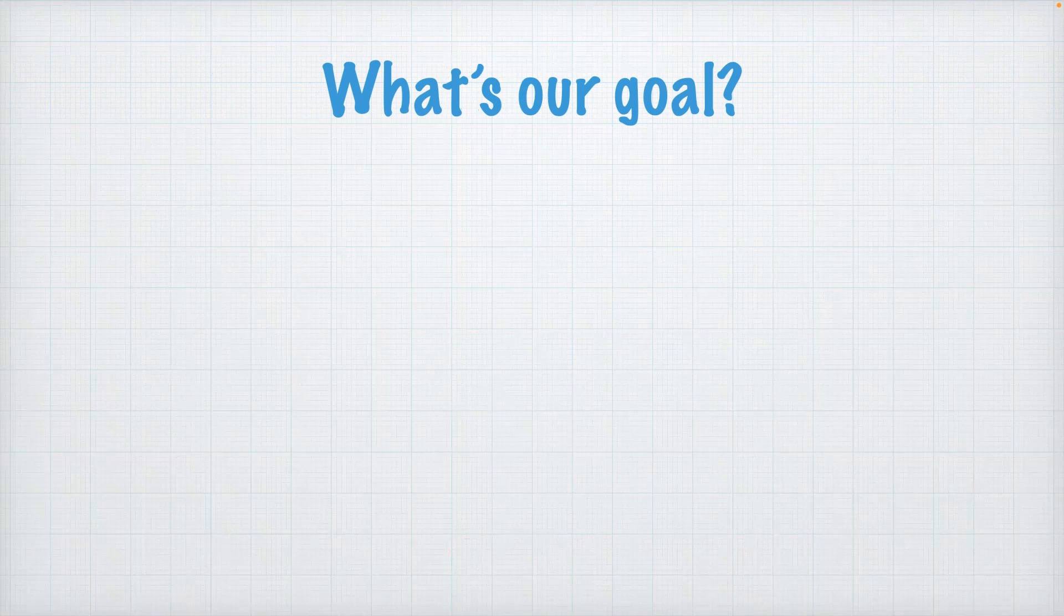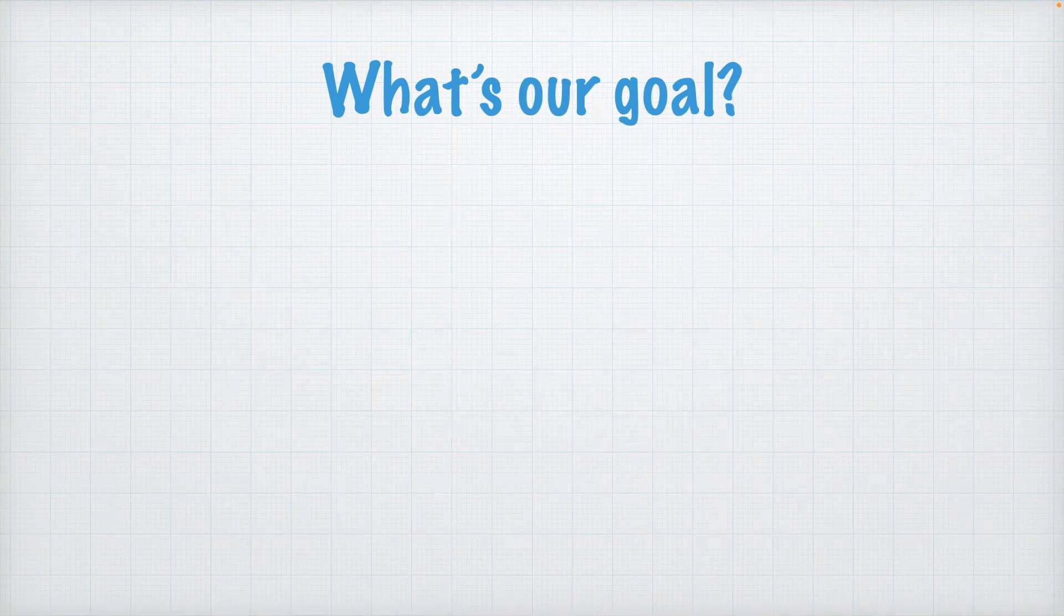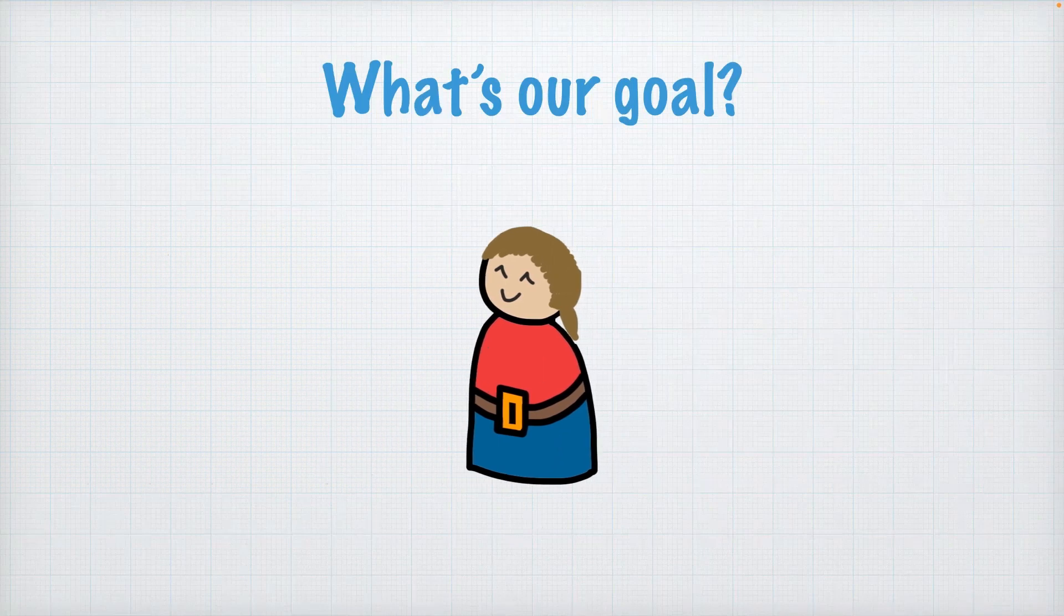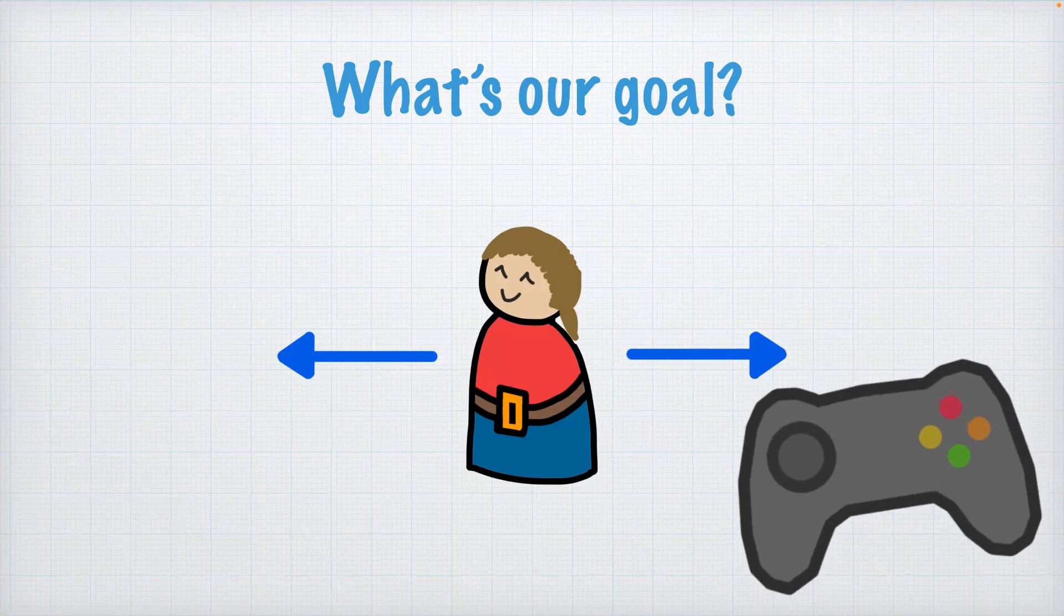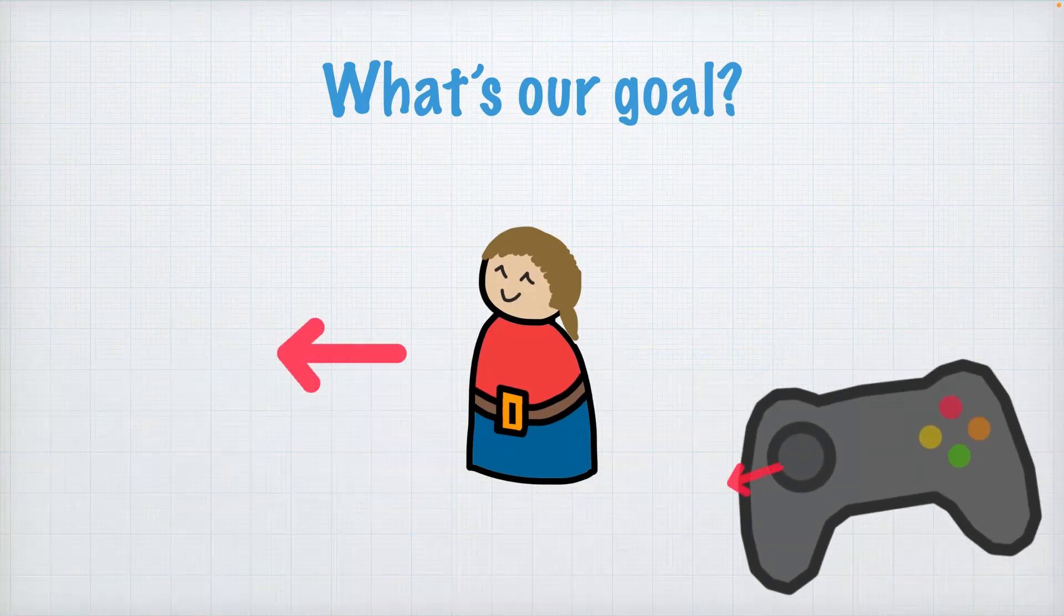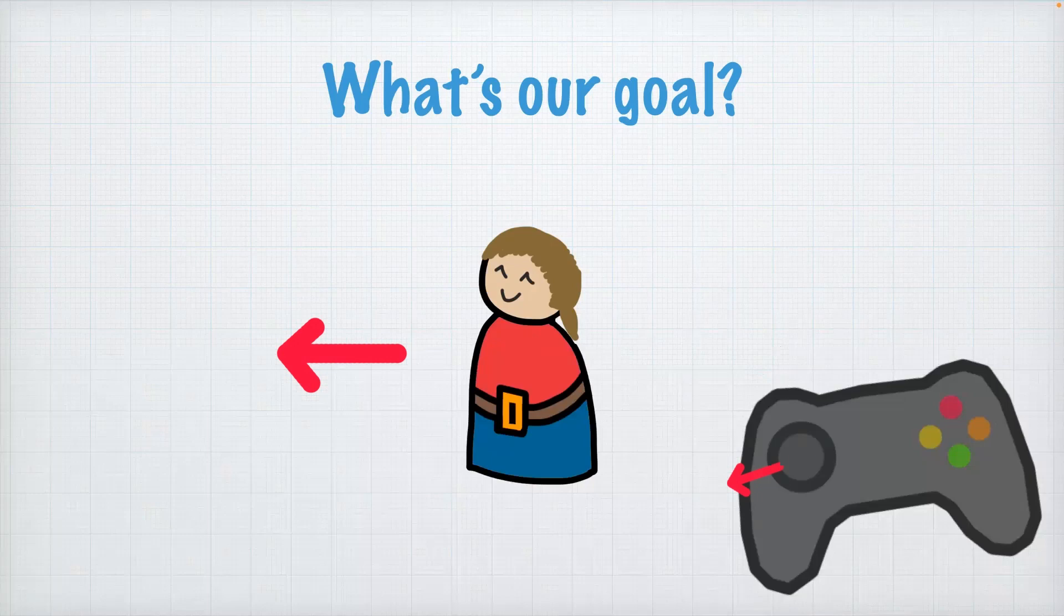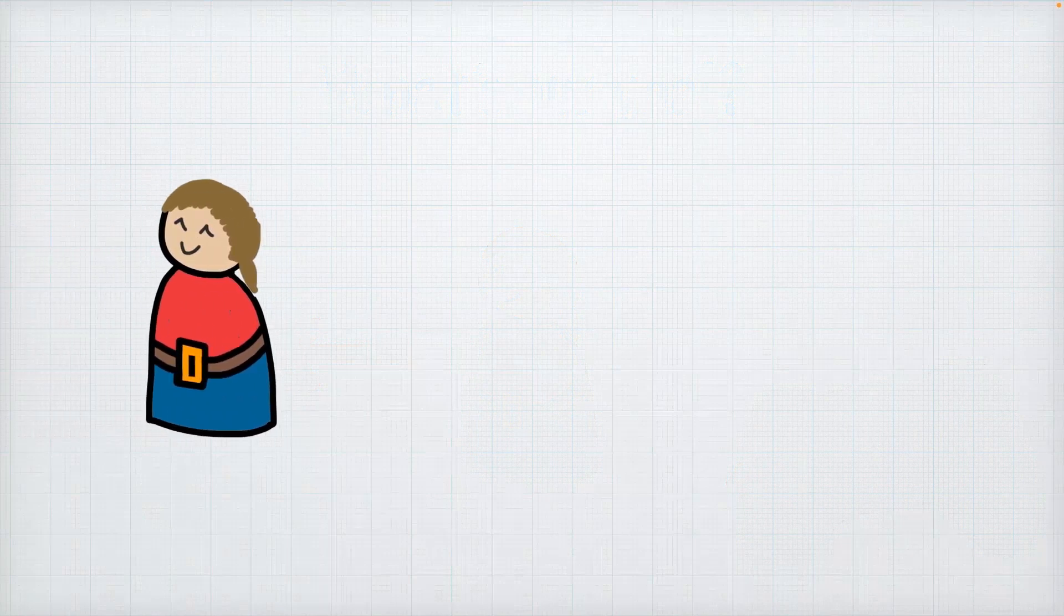Before we jump into code let's start and think about what we want to achieve. So the answer to that is that we want our 2D sprite to move on our screen as a result of input from the player and we want them to move in the correct direction that the player pressed. If we press the left button we want a character to move left. So now that we know what our goal is let's talk about how we can achieve it.